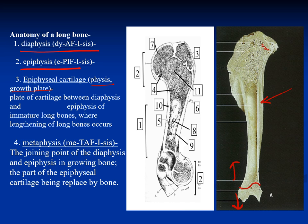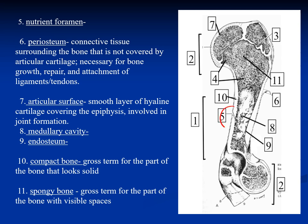Once the growth plate ossifies and is replaced by bone, there is no more elongation of the bone. The structure found between the epiphysis and diaphysis is called the metaphysis — it is the joining point of the diaphysis and epiphysis in growing bones, and it replaces the epiphysial cartilage. We also have the nutrient foramen — from this area, blood vessels enter and supply the bone. Usually we find several nutrient foramina in the bones.